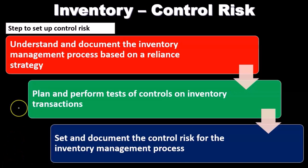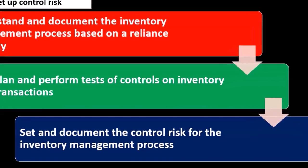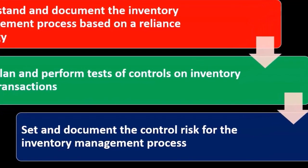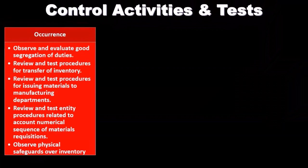Once we set the control risk, we can then consider the detection risk. With the inherent risk and control risk established, we consider the detection risk — the element we have control over through the amount of substantive testing we do. This more detailed testing involves going to the client, pulling inventory files, looking at and observing inventory, watching processes, and similar activities.